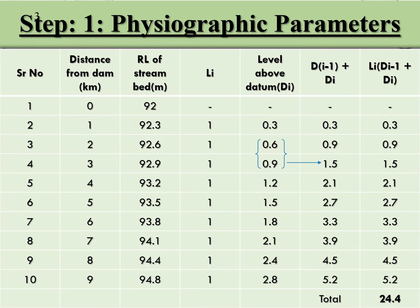For example, at the starting point the level is 92, then 92.3, 92.6, and so on. The length of each section is 1 km because I have divided the stream into 9 equal 1 km parts. Now, level above datum is the level above the starting point — so 92.3 minus 92 is 0.3, 92.6 minus 92 is 0.6, 92.9 minus 92 is 0.9, and so on.